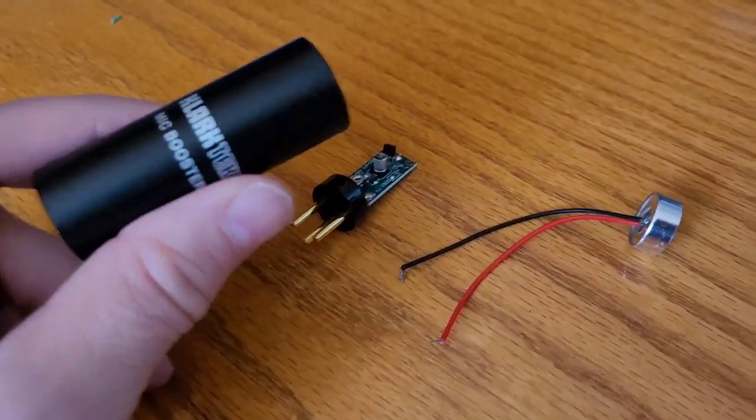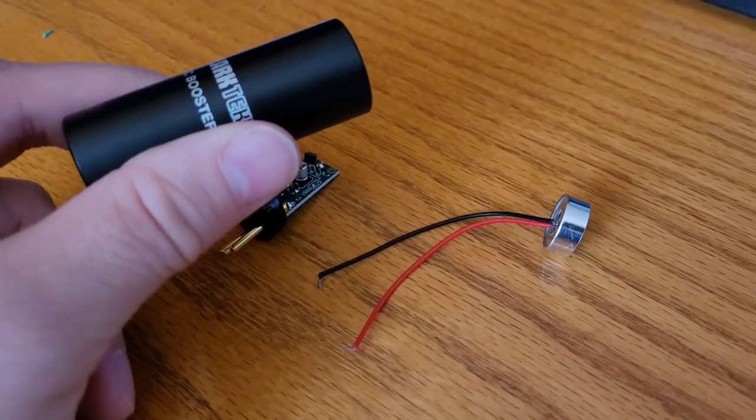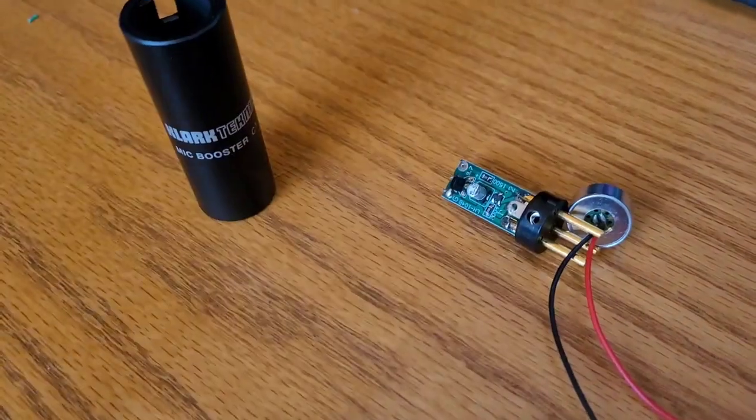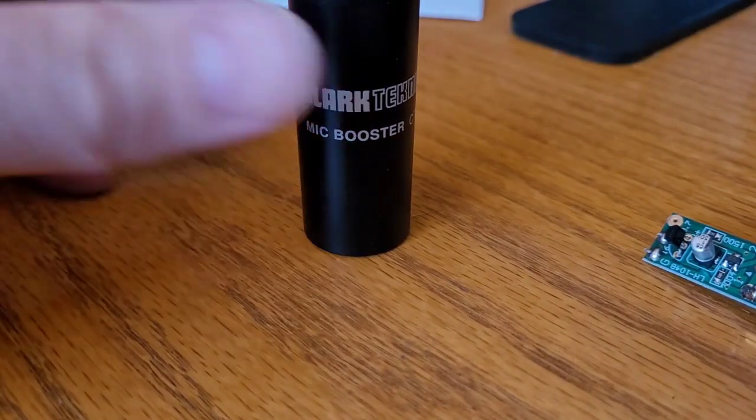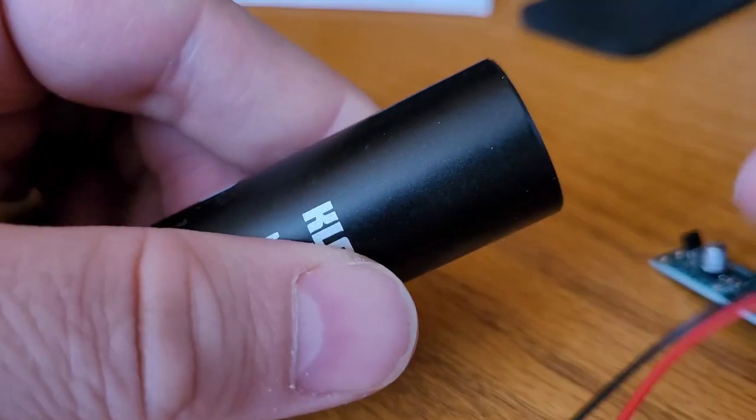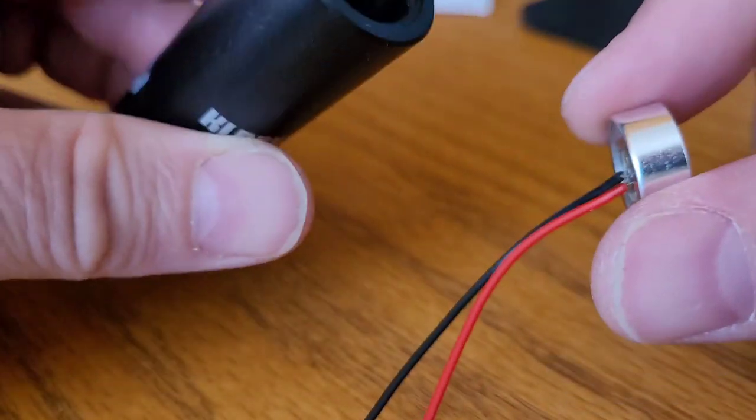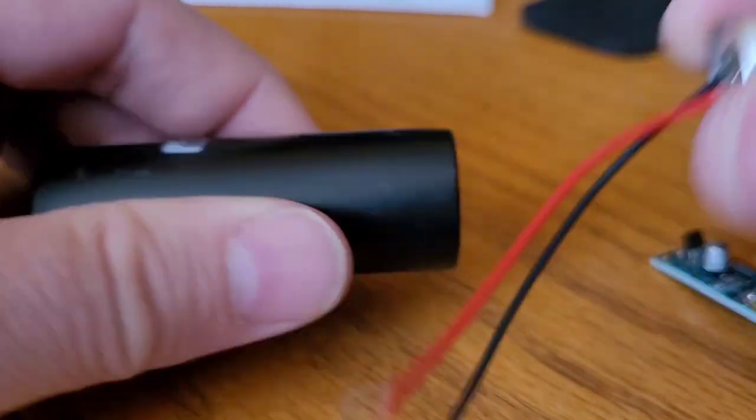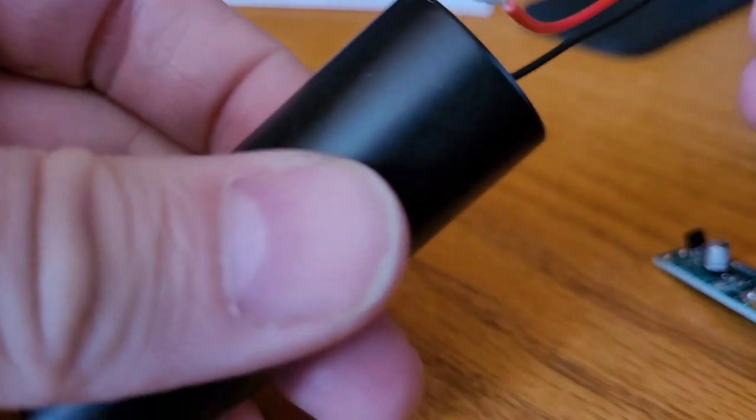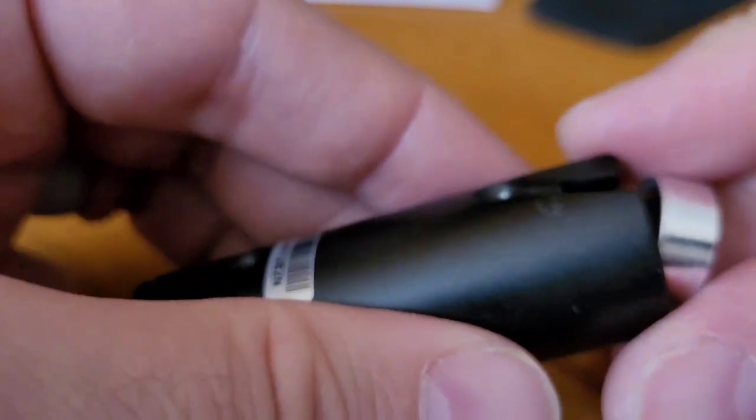Might as well make a mini mic, a mini condenser. To do that I'm going to take the little capsule, run down the top of the CT1 body. It's going to be the easiest thing I've ever done, honestly.